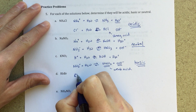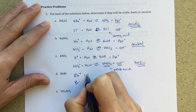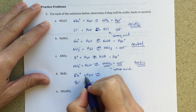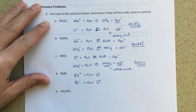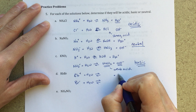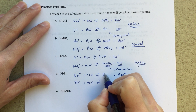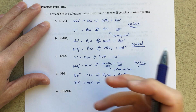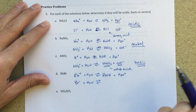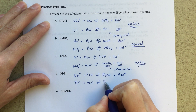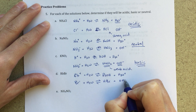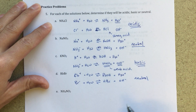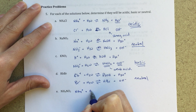Next, RbBr: for Rb+ + H2O, we form H3O+ and rubidium hydroxide. RbOH is a strong base — we should recognize that from the periodic table. So that reaction won't go to the right. For Br- + H2O, we get HBr and OH-. HBr is a strong acid, so that reaction also won't go to the right. Therefore, RbBr will be neutral.